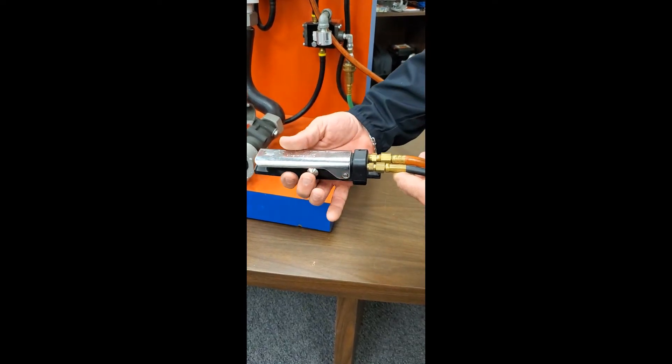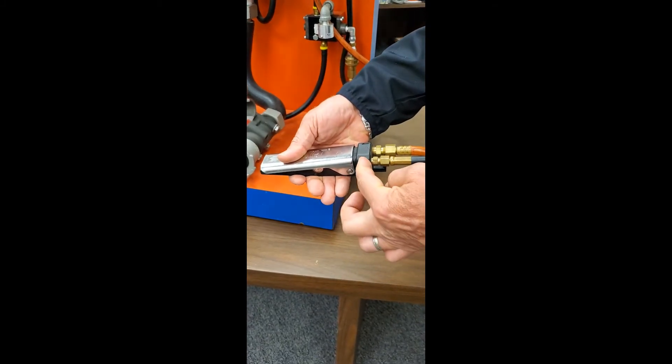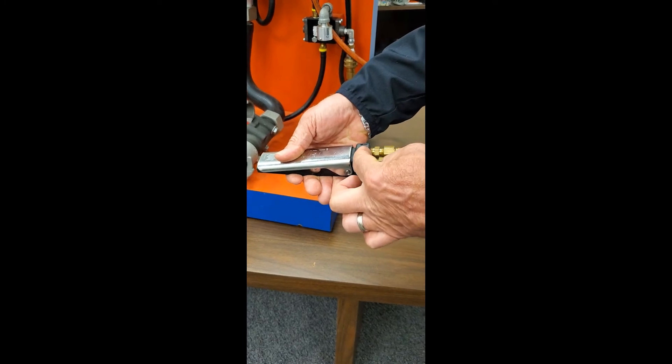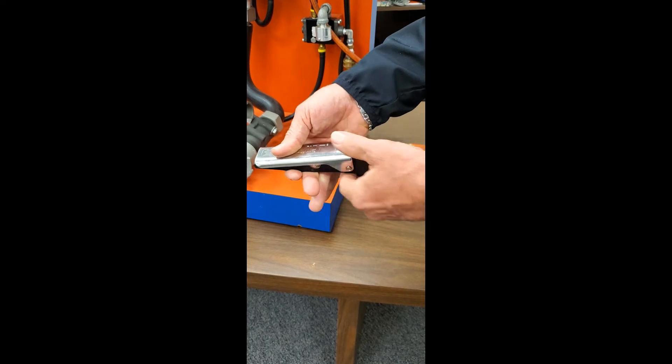It is not until you depress the handle on the dead man control that it opens up the channel for that supply air to go down the signal line, which is the black line.